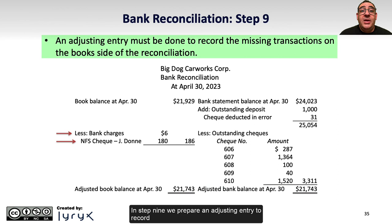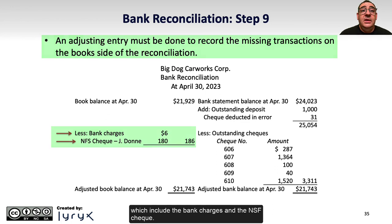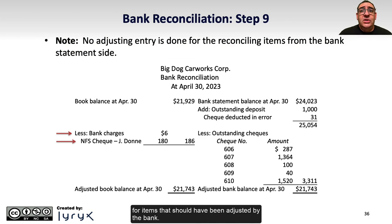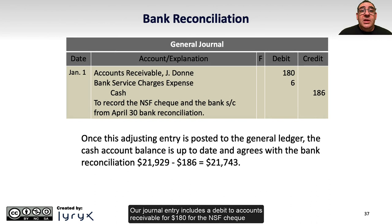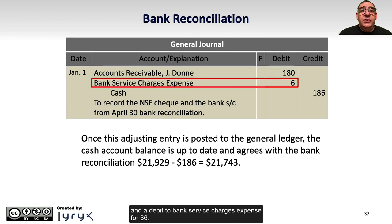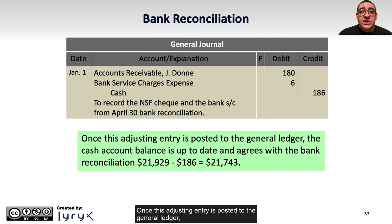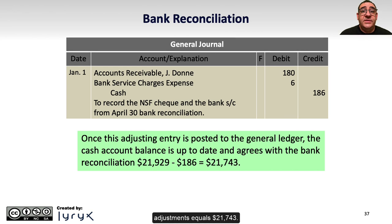In Step 9, we prepare an adjusting entry to record the missing transactions on the book side of the reconciliation, which include the bank charges and the NSF check. Note that no adjusting entry is made for the reconciling items from the bank statement side — this should make intuitive sense since we can't adjust our books for items that should have been adjusted by the bank. Our journal entry includes a debit to accounts receivable for $180 for the NSF check and a debit to bank service charges expense for $6. The debits add up to $186, which is the amount credited to the cash account. Once this adjusting entry is posted to the general ledger, the cash account is up to date and agrees with the bank reconciliation: $21,929 at the beginning minus $186 in adjustments equals $21,743.